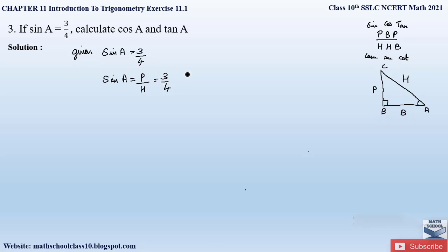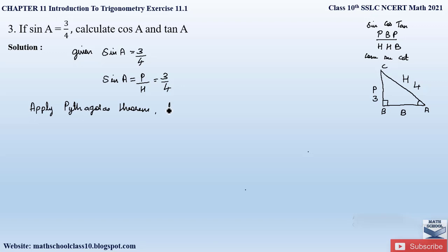Here they have given us the perpendicular side value equal to 3, and the hypotenuse side value is equal to 4. Now let us apply the Pythagorean theorem to determine the base value, so that we can find out the values for cos and tan as well. Apply Pythagorean theorem to triangle ABC.